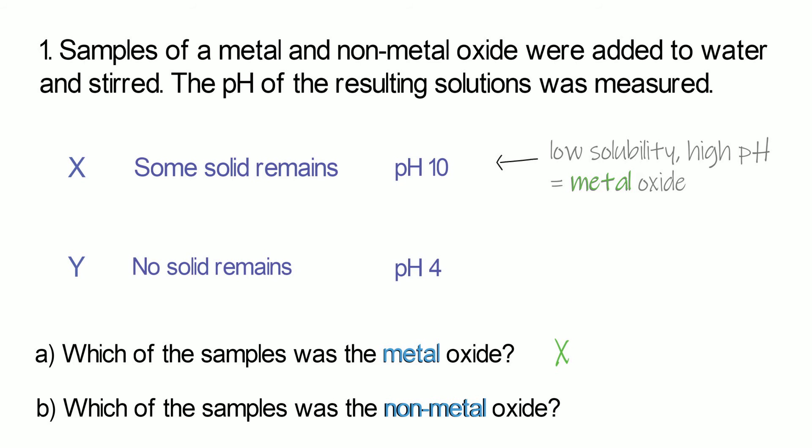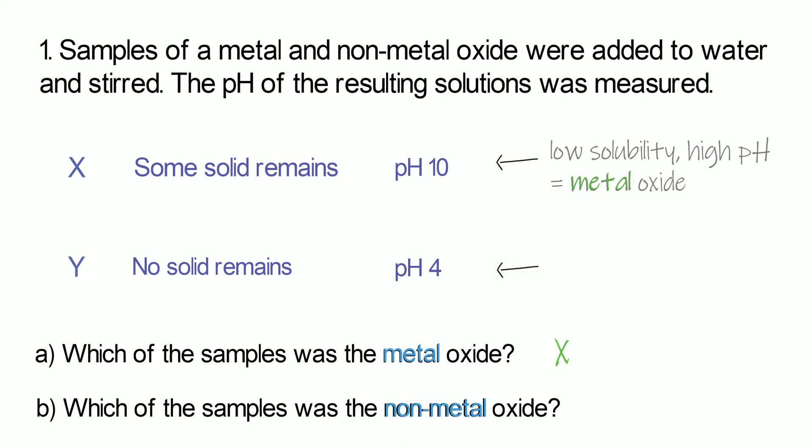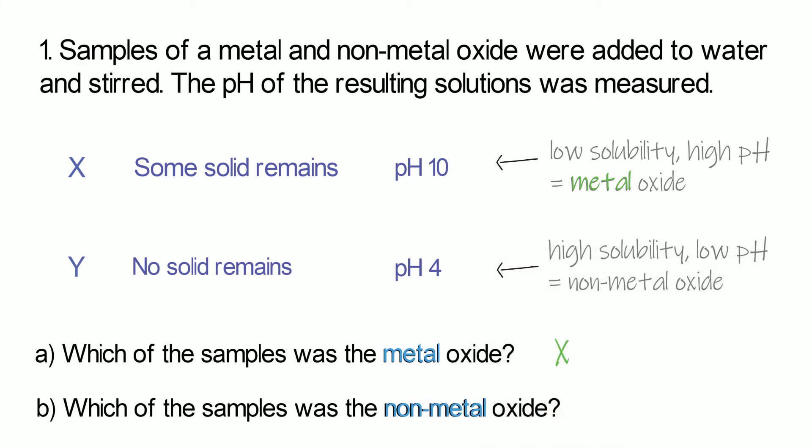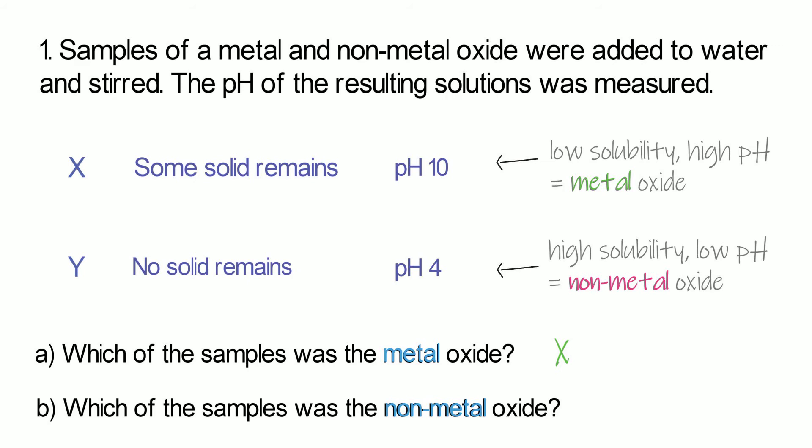And that means that because Y has no solid remaining it must have a high solubility. And the solution produced has a low pH. That means it's going to be a non-metal oxide. So the non-metal oxide will be Y.